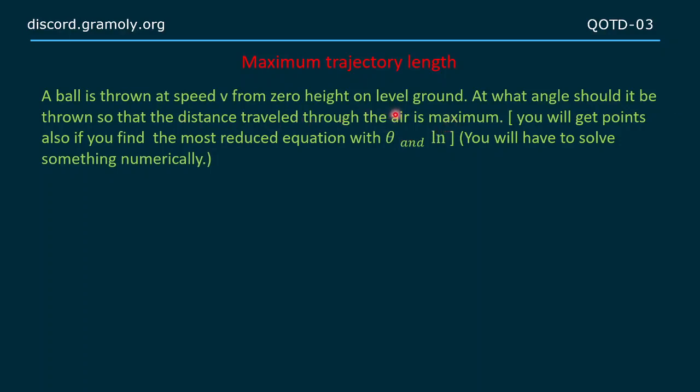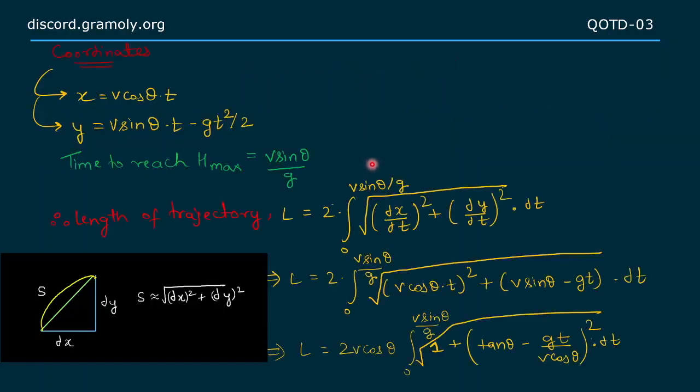Let's start with the solution. As we know, the x coordinate of the projectile will be v cos θ times t, as there is no acceleration in the x-axis. The y coordinate will be v sin θ times t minus gt squared by 2 from linear equations of motion. The time to reach H max will be v sin θ by g.